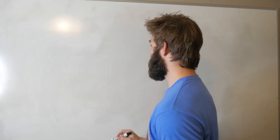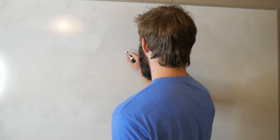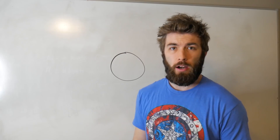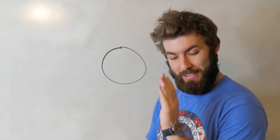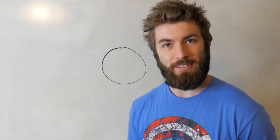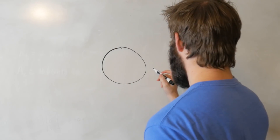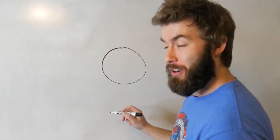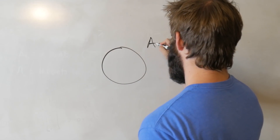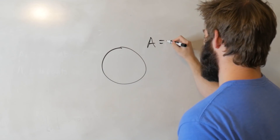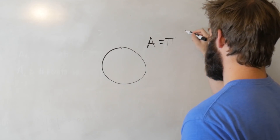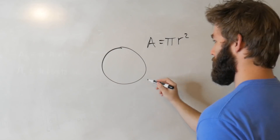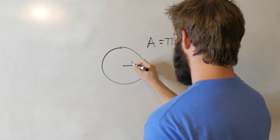What's going on, smart people? This is a square. This is a circle. And everyone knows that the area of a circle can be represented as some weird constant pi times the square of its radius, where this is the radius.